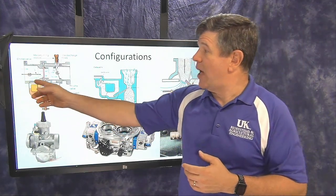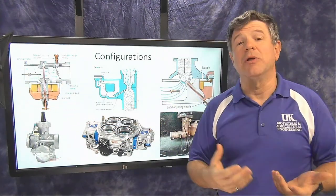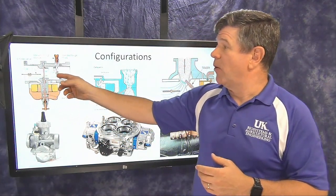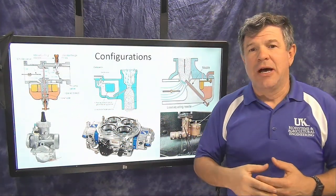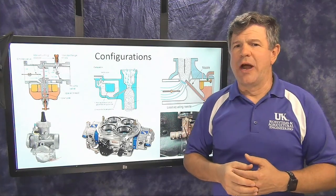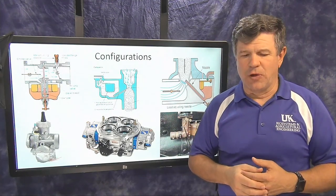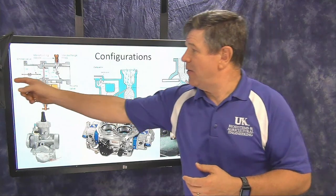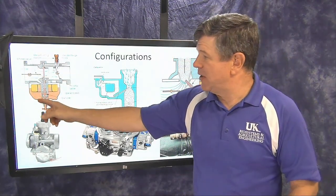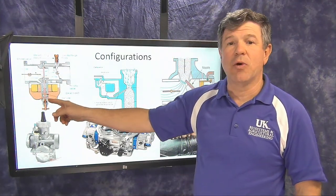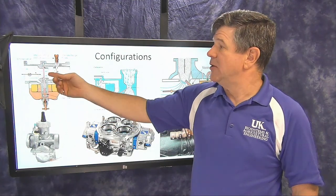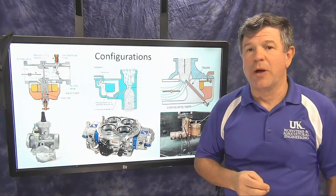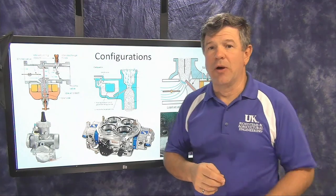The first carburetor looks a lot like the one we looked at when studying basic principles, where the air is just flowing horizontally from left to right. We call this a cross-flow carburetor — the air simply flows across. Typically the fuel is in a reservoir below the carburetor and is pulled up into the carburetor in a couple of different ways.